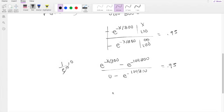So you can simplify this a little bit more. You can split this up into e to the negative x over 300, divided by negative e to the negative 100 over 300, plus 1. And this equals 0.95.